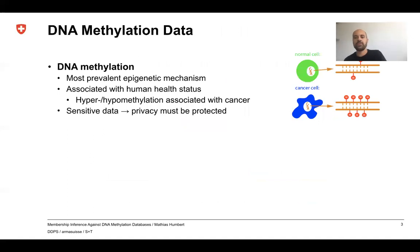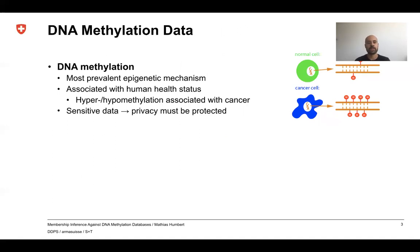Now, how about DNA methylation data? DNA methylation data are biomedical data. DNA methylation is the most prevalent epigenetic mechanism known at the moment, and it is associated with human health status. For instance, hyper- or hypomethylation is known to be associated with cancer. As such, it is very sensitive data and its privacy must be protected.